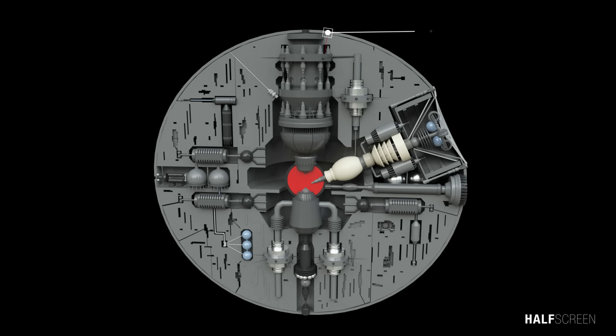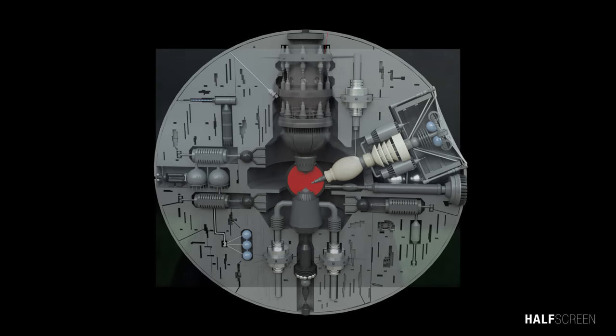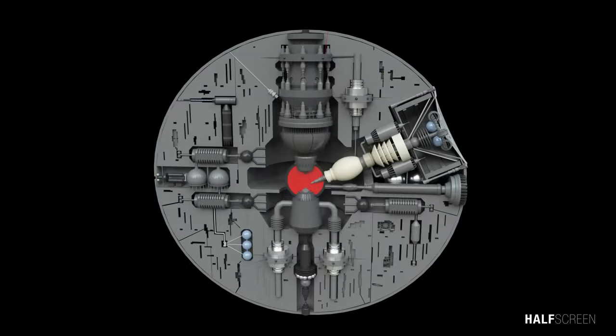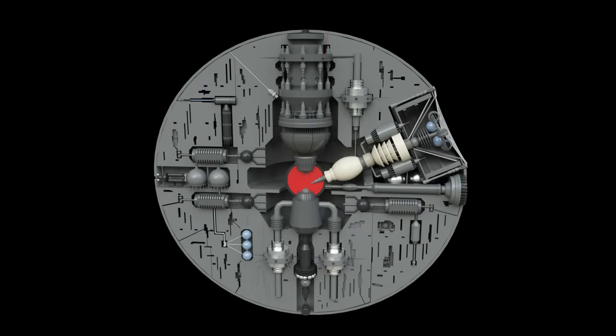A thermal exhaust port was a small opening on the Death Star that led to its reactor core, which was deliberately designed by Galen Erso as an act of sabotage to give the station a critical vulnerability. The target area is only 2 meters wide and is right below the main port.